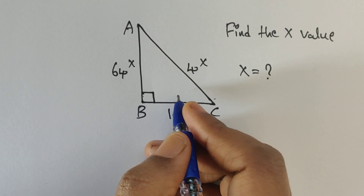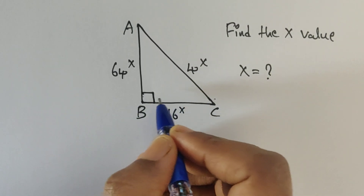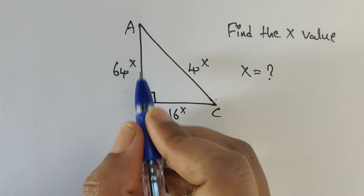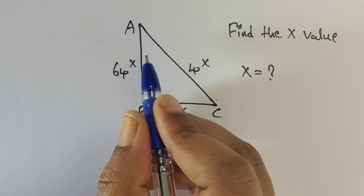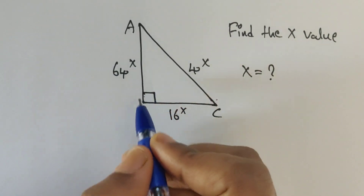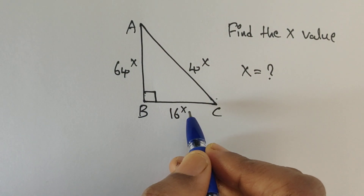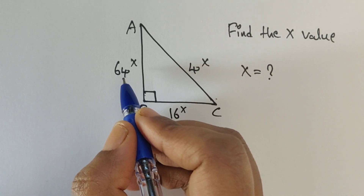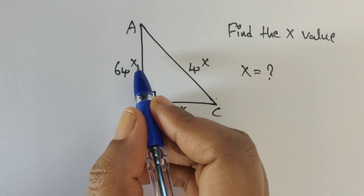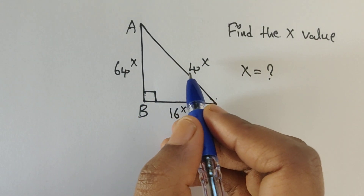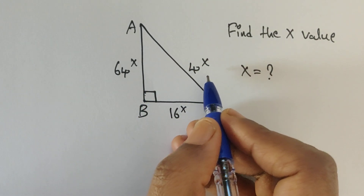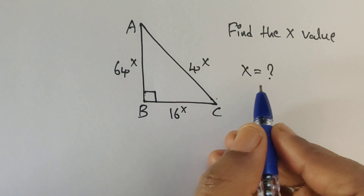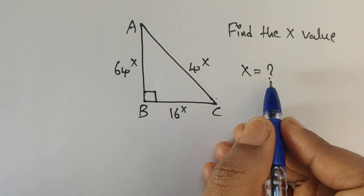Hello everyone, welcome back to our channel. Here we have one problem. We have one right triangle. The base is given 16 to the power of x, the height is given 64 to the power of x, and the hypotenuse is given 4 to the power of x. In this problem we have to find the value of x.